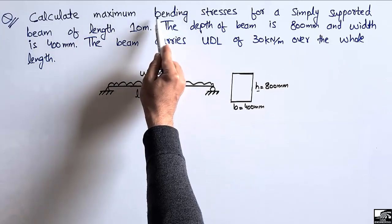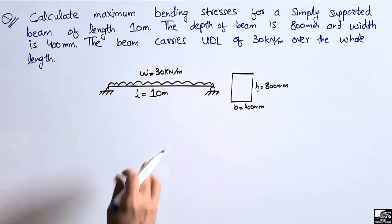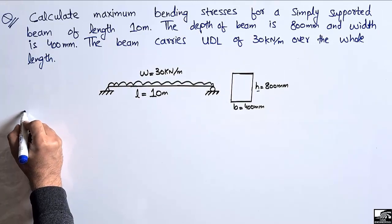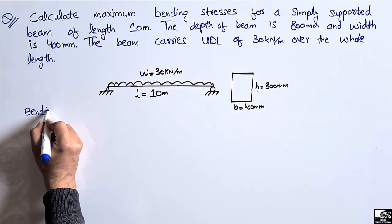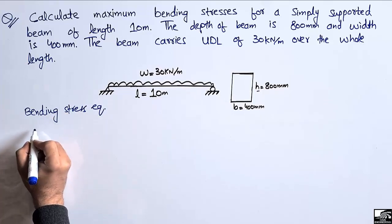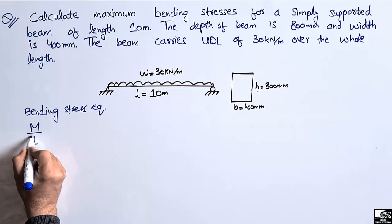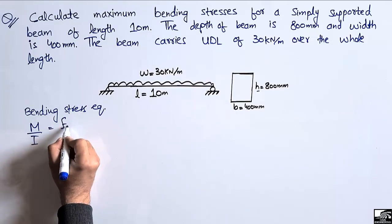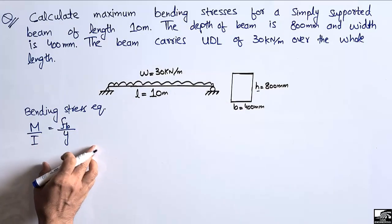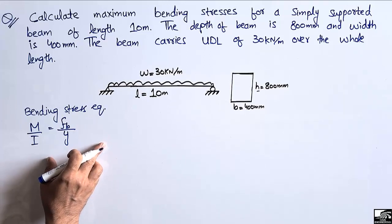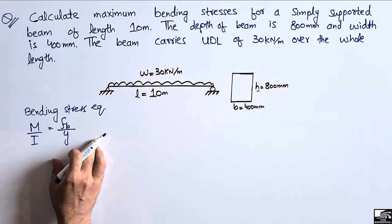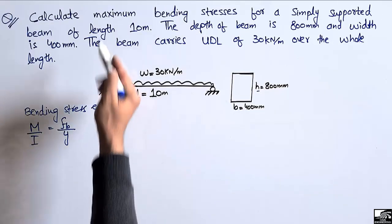To find the maximum bending stresses, we use the bending stress equation: M divided by I equals the bending stress divided by y. This is the bending stress or flexural stress equation, used to find the stresses at any point in the beam.